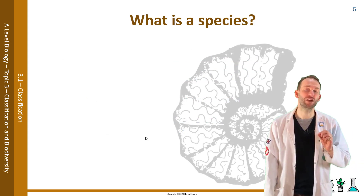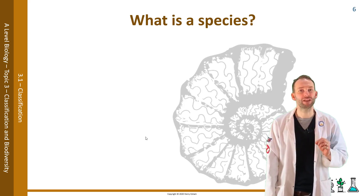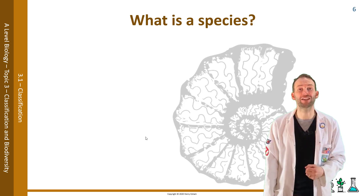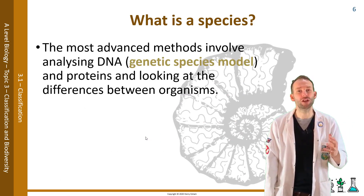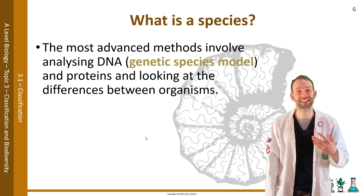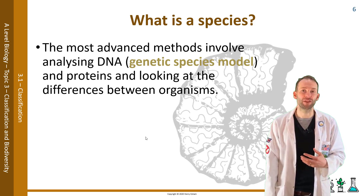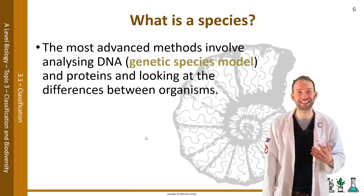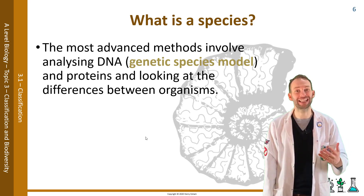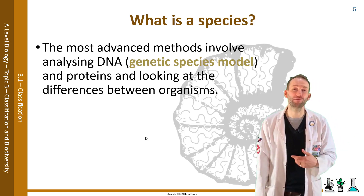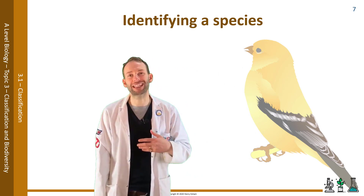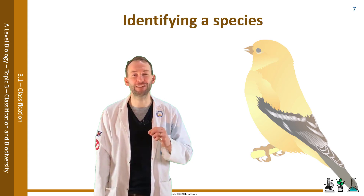What about bacteria, which don't interbreed at all? So the idea of what a species is is actually a more complicated question than you may originally think. There are many other ways scientists have found to define the term species, but they all have their own problems. The most advanced methods involve analyzing DNA - this is the genetic species model - and proteins, looking at differences between organisms. However, collecting DNA can be impossible from some fossils.